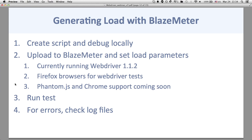You really don't want to hit 100% CPU on the load generators because you won't get accurate response times — what might actually be a 500ms response time could look like 800 or 900ms because the machine itself is busy. So, the steps for running a test on BlazeMeter: first, create and debug the script locally. If you don't make sure it works locally, you'll struggle to debug it on BlazeMeter, plus you have to wait a couple of minutes when running a new test.